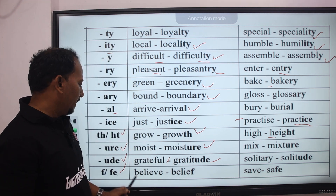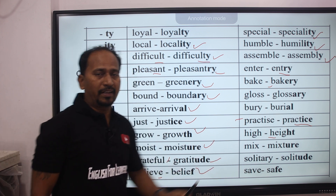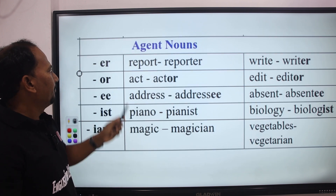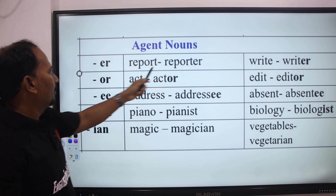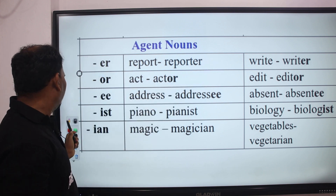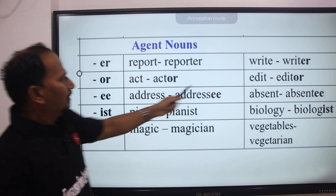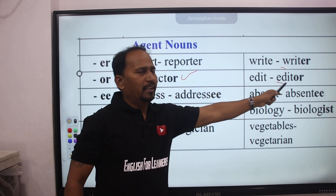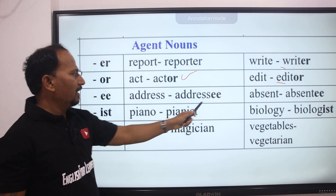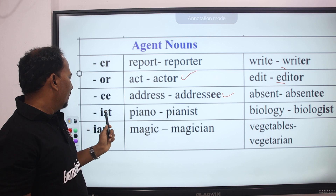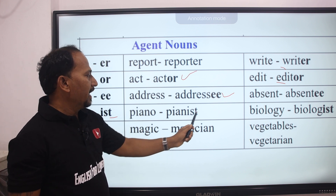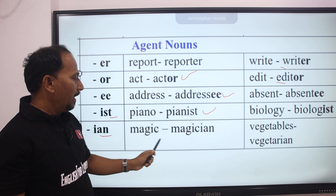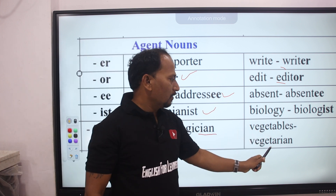Suffix -ive: believe → belief, save → safe. These are nouns formed with suffixes. More noun suffixes for people: -er: report → reporter, write → writer. -or: act → actor, edit → editor. -ee: address → addressee, absent → absentee. -ist: piano → pianist, biology → biologist. -ian: magic → magician, vegetable → vegetarian.